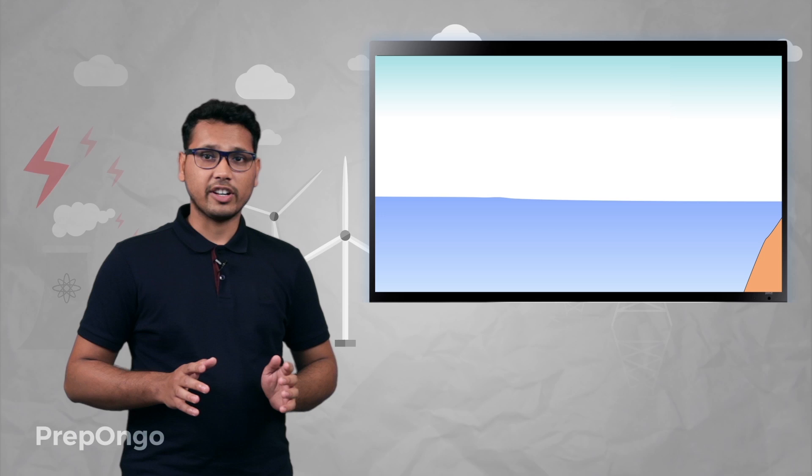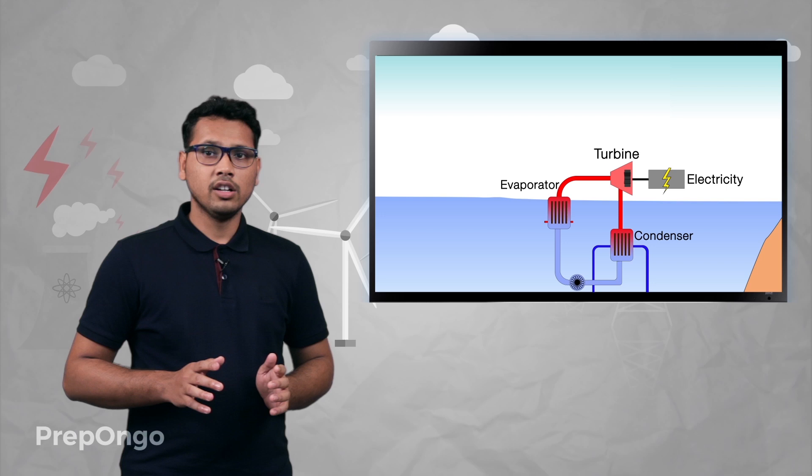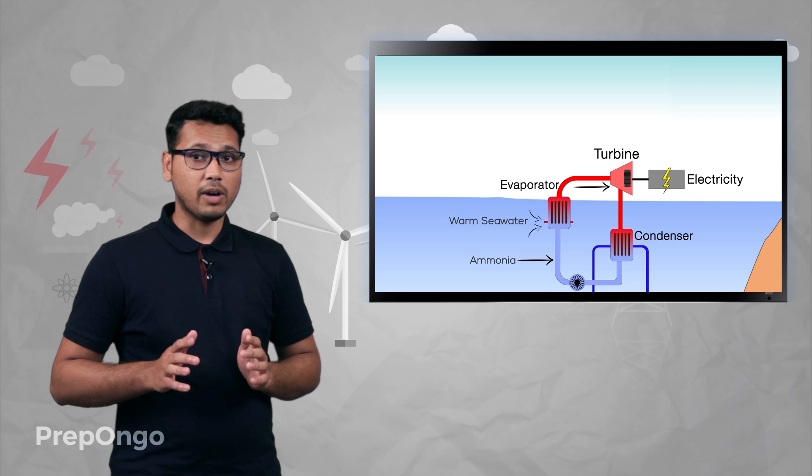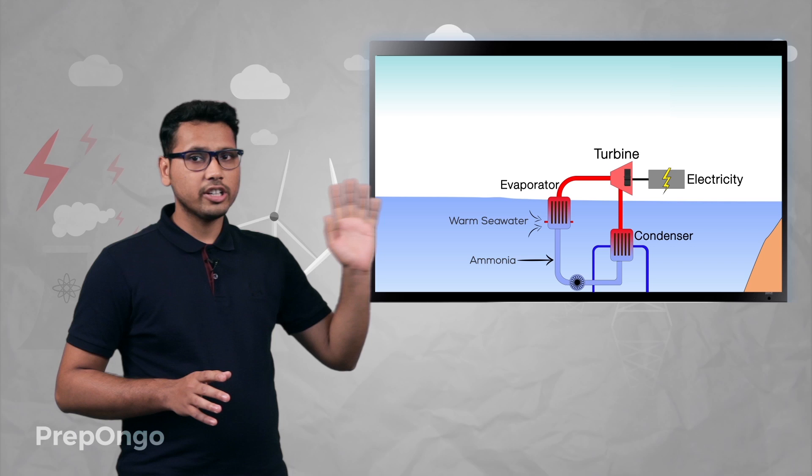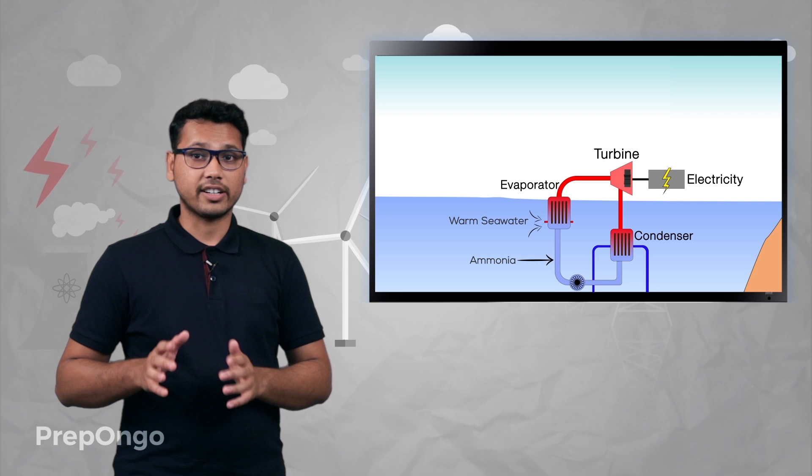To use this temperature difference, a plant is set up which operates on the temperature range of 20 degrees Celsius. We take a volatile liquid like ammonia which boils up by the surface waters. When this vapor is thrown on the turbine, the vapor rotates the turbine which generates the electricity.